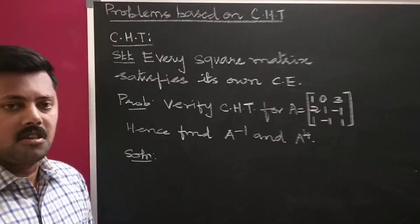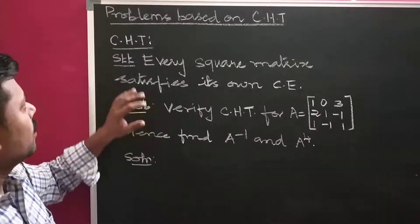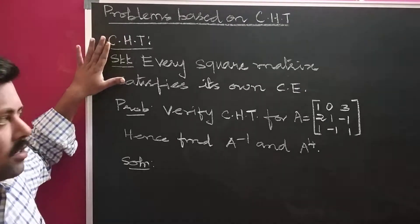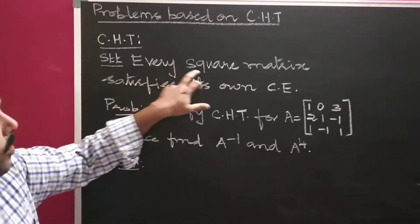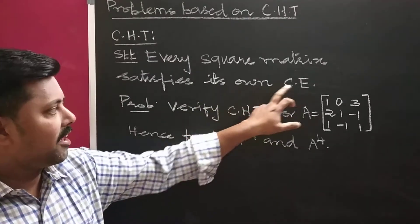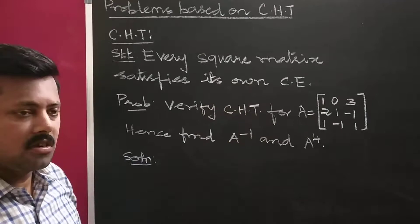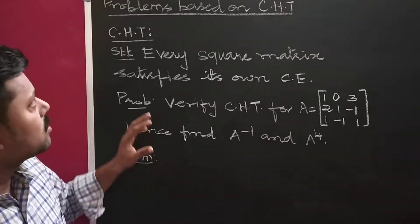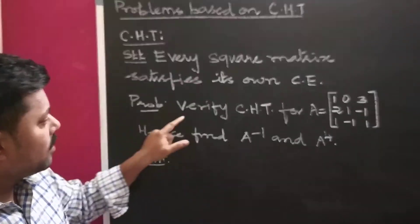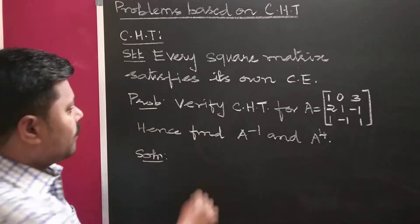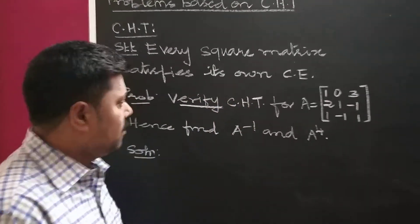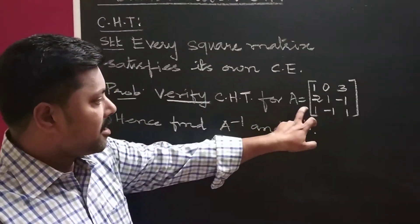What is the Cayley-Hamilton theorem? The statement is: every square matrix satisfies its own characteristic equation. Now we will look at a problem based on Cayley-Hamilton theorem. First, verify the Cayley-Hamilton theorem for the matrix A.